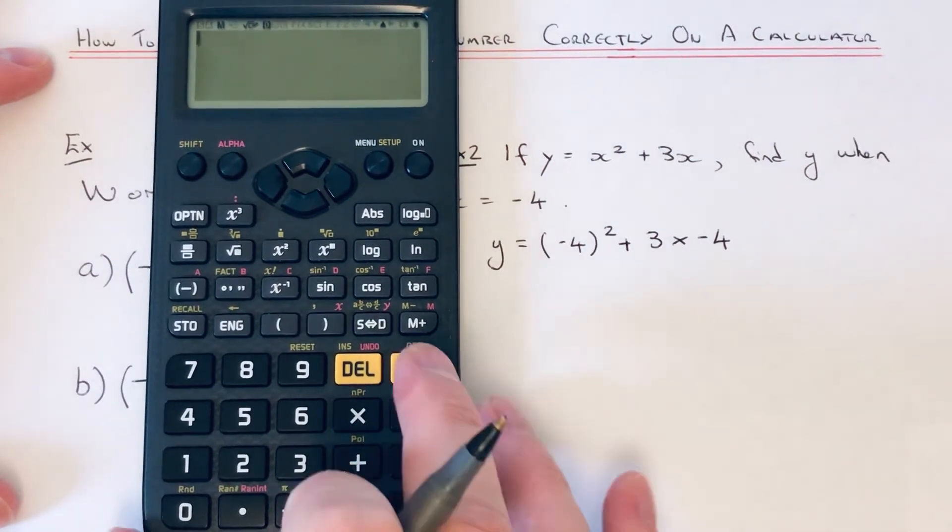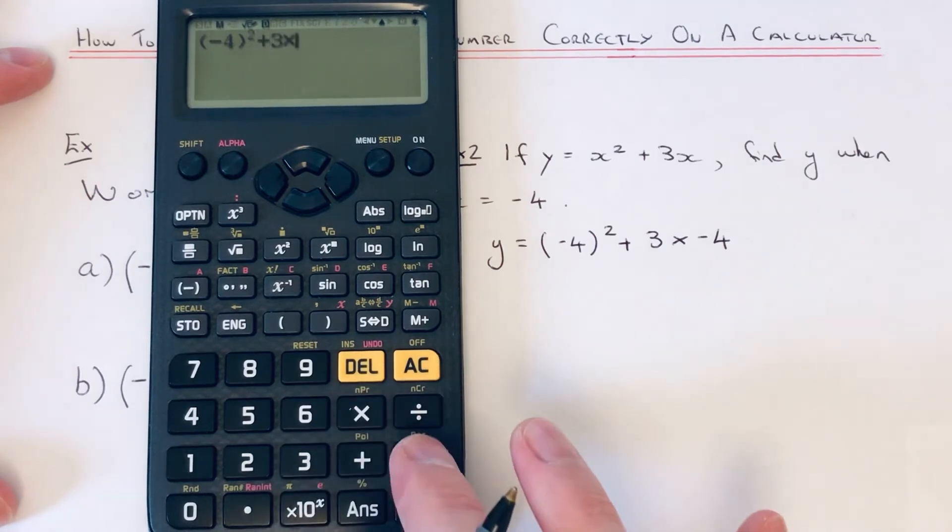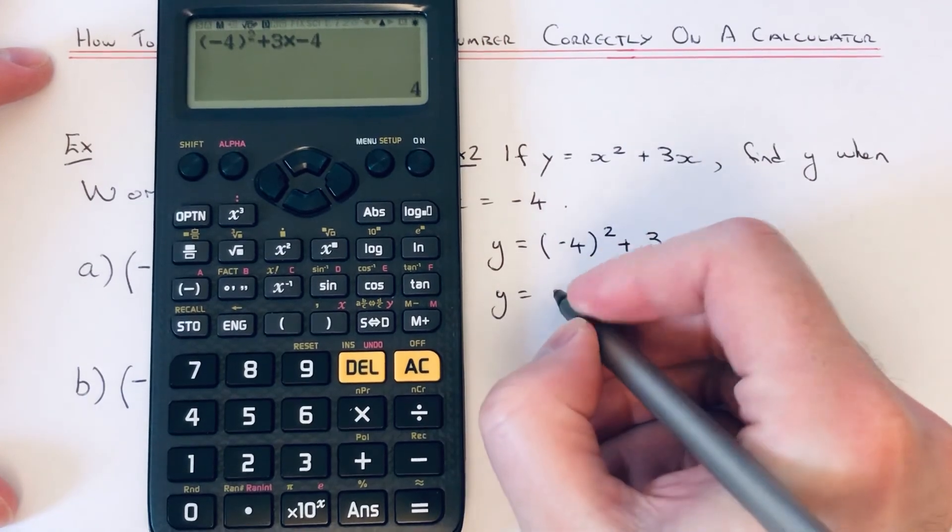Okay, so let's see what we get. We've got minus 4, close your bracket, squared, plus 3 times negative 4, and the answer comes out as y equals 4.